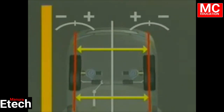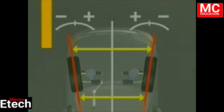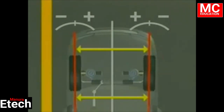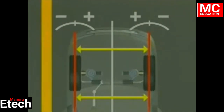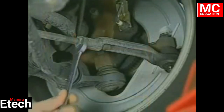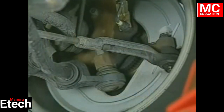Toe is negative or toe-out when the rear of the tires are closer together than the front of the tires. Zero toe occurs when the wheels are parallel. Toe is adjusted with the tie rod end adjusters. The steering wheel can also be centered using this adjustment.